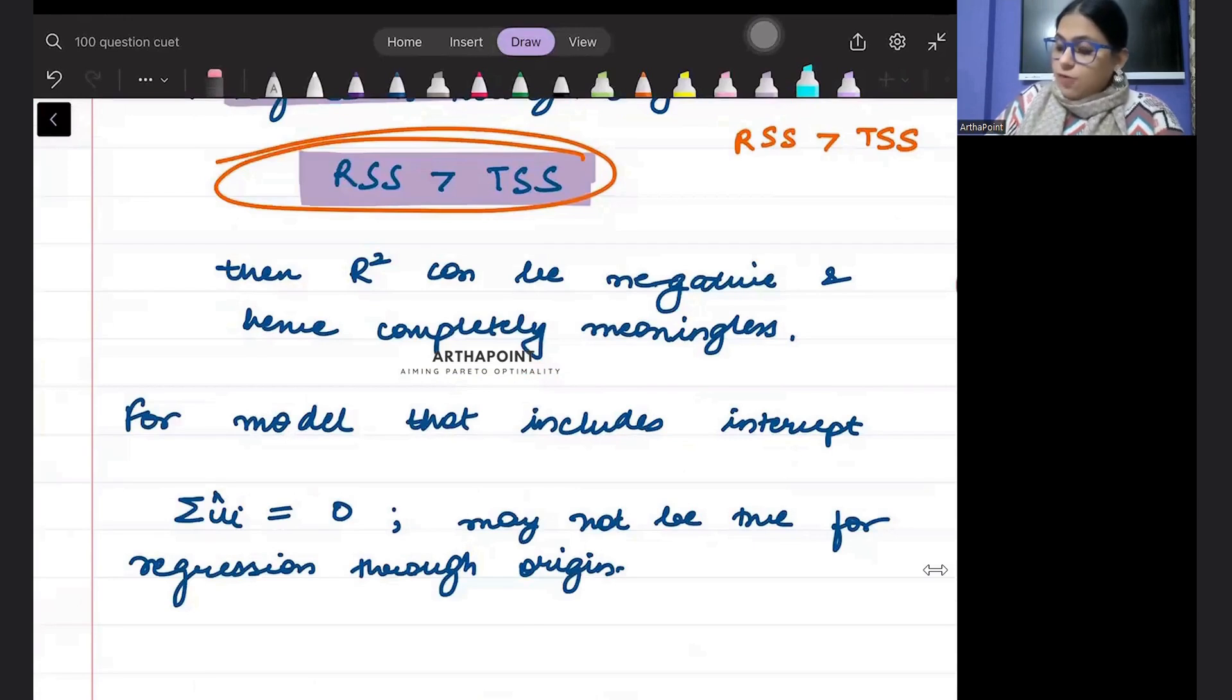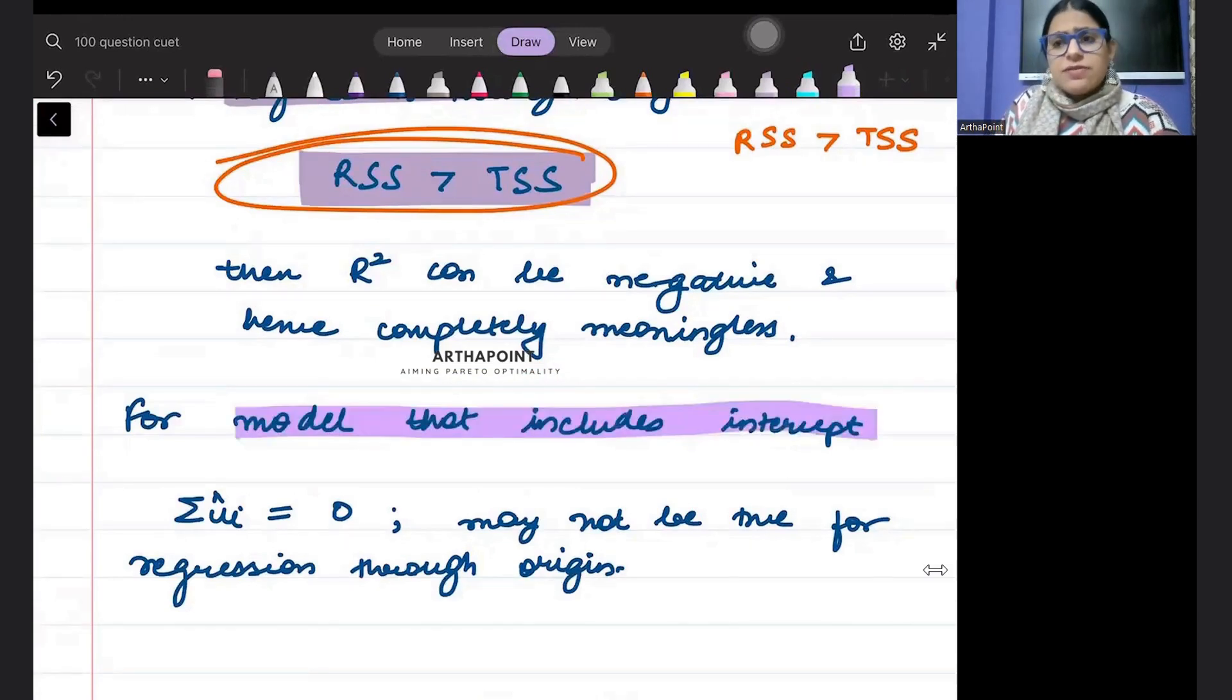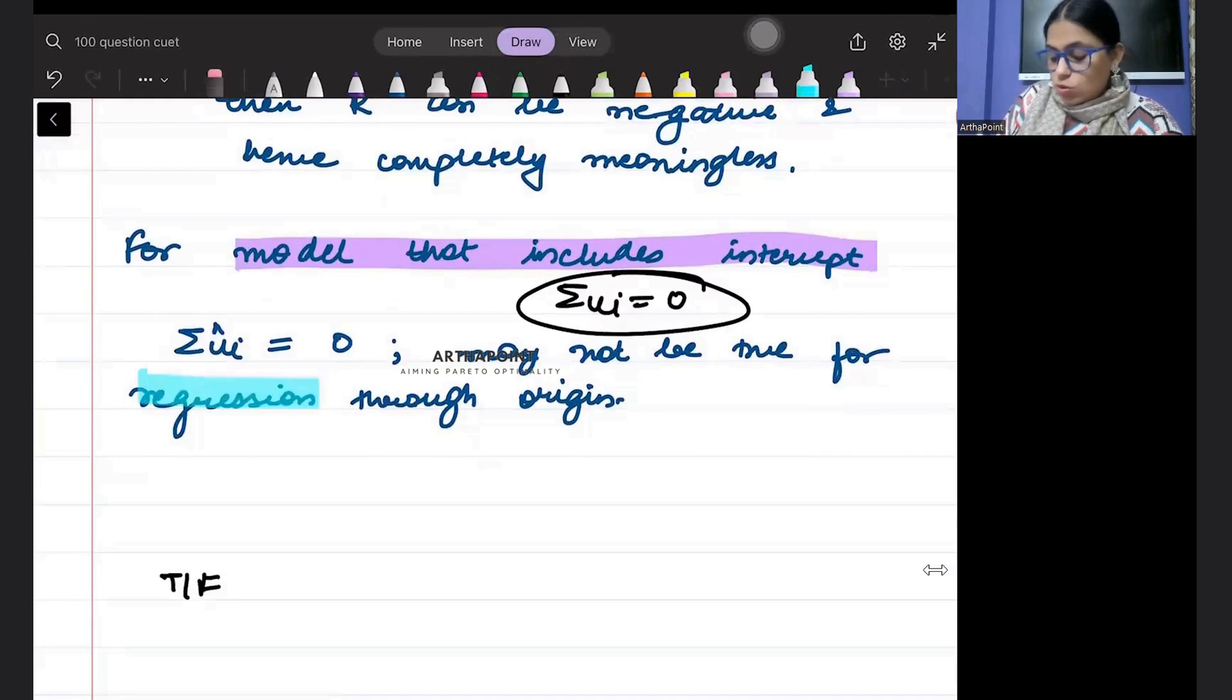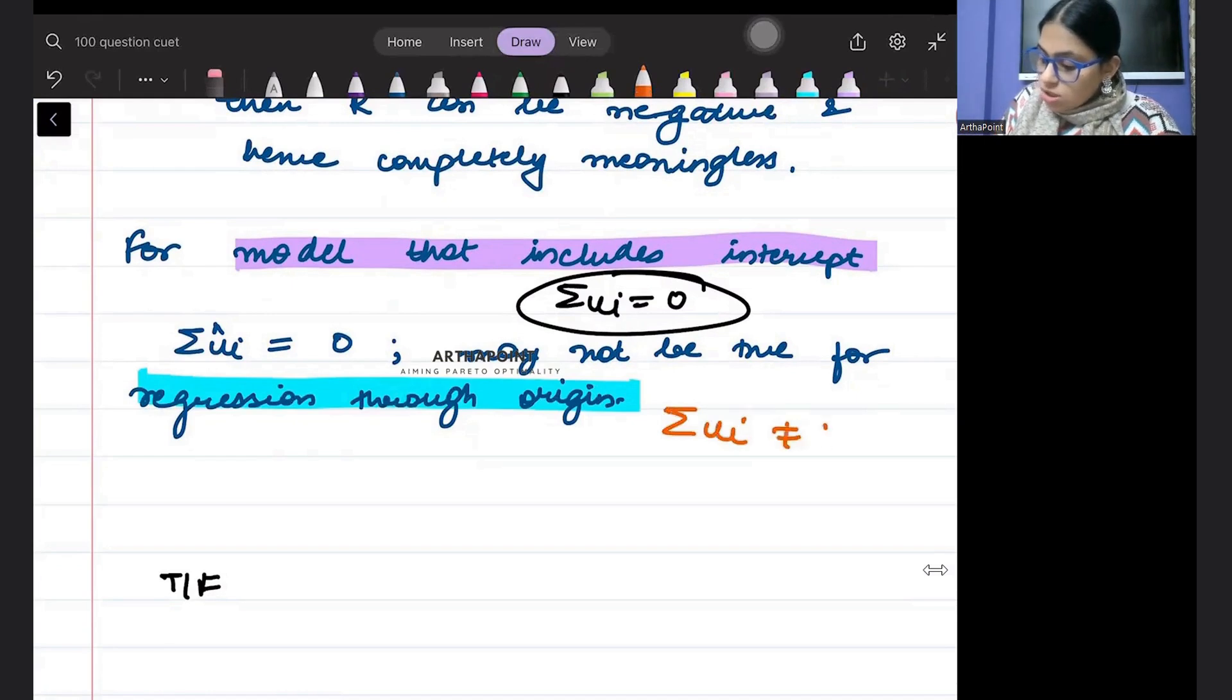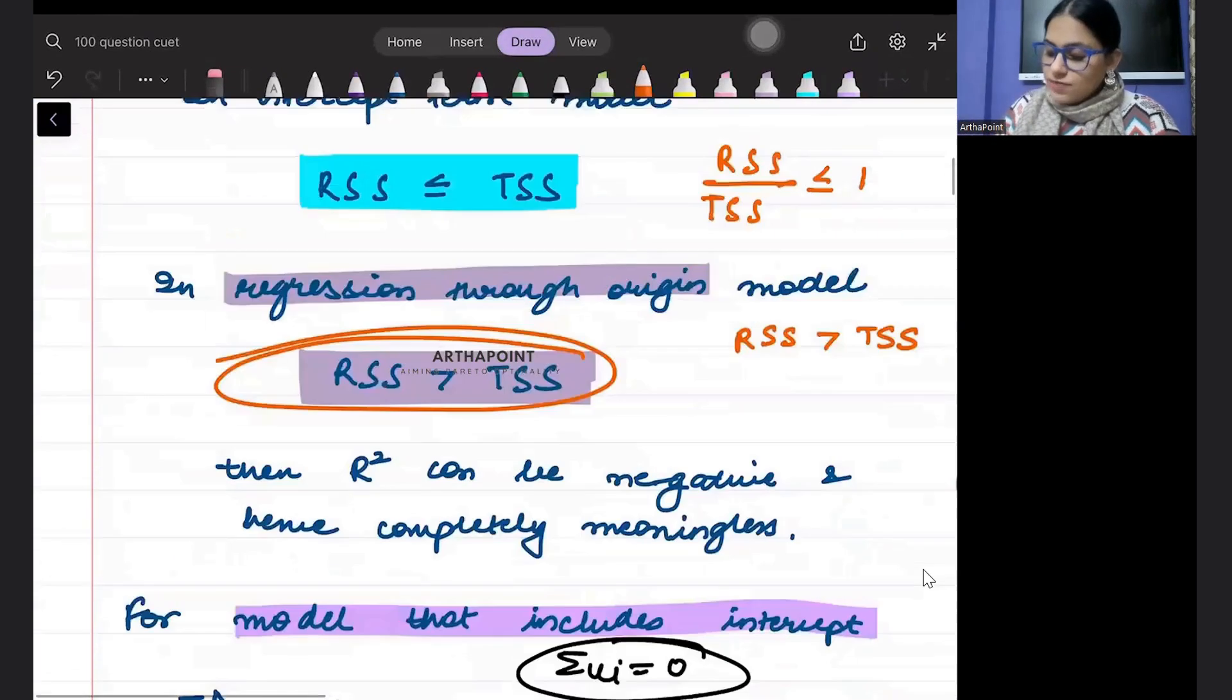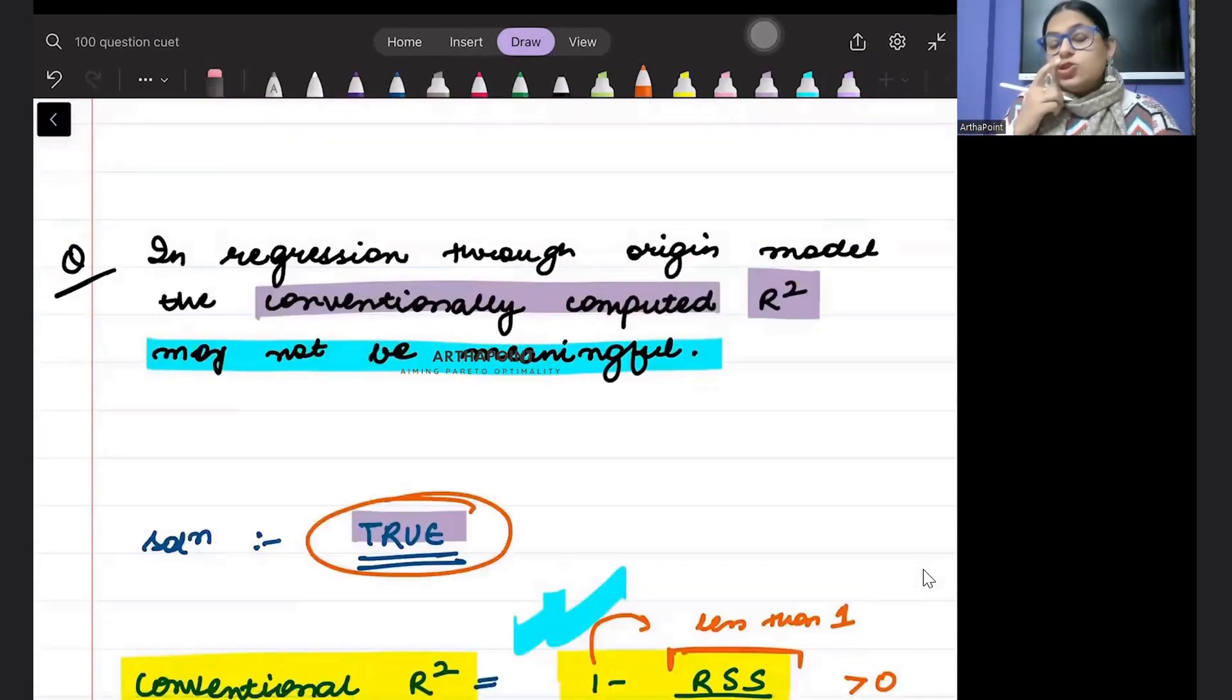Also, for intercept models, we know that sum of ui was zero. Sum of error terms was zero with the models which had the intercept term. But models through origin, their sum of the error term is also not equal to zero. It may be non-zero. So there are a lot of things which are not true for models through the origin. We can go ahead and say that this is a true statement. The models which are passing through the origin, the formula of R-square for them is incorrect.